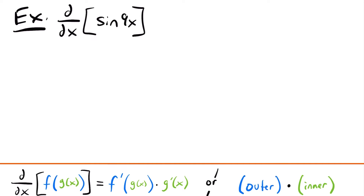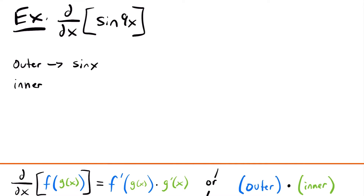For our next example, we want to find the derivative of sine of 9x. This is a composite function so we'll use the chain rule. We can remember the chain rule as: derivative of the outside times derivative of the inside. The outer function is sine x and the inner function is 9x.